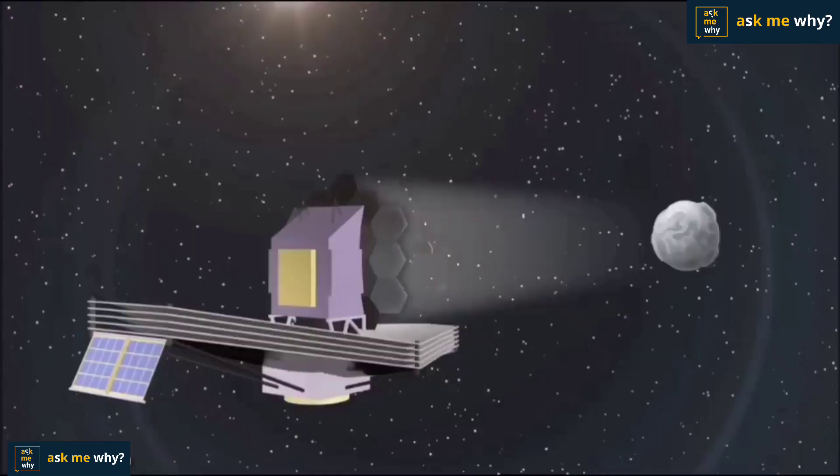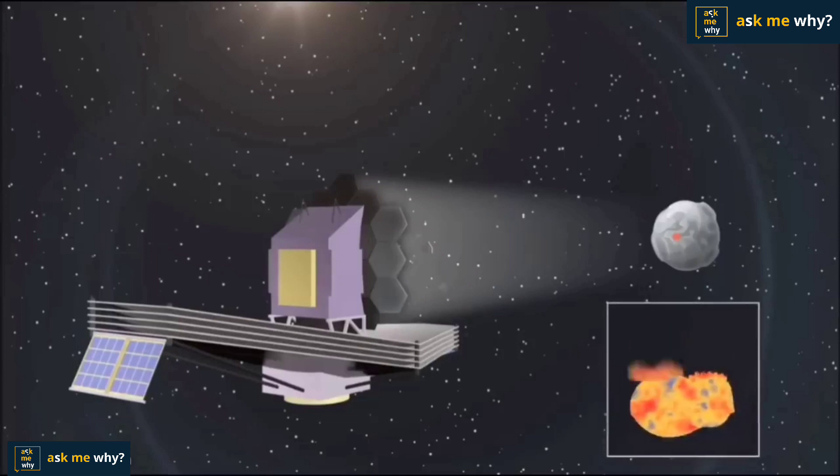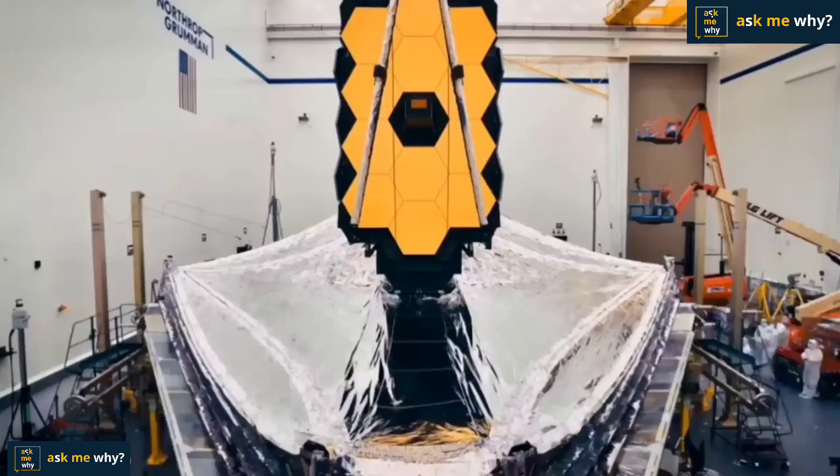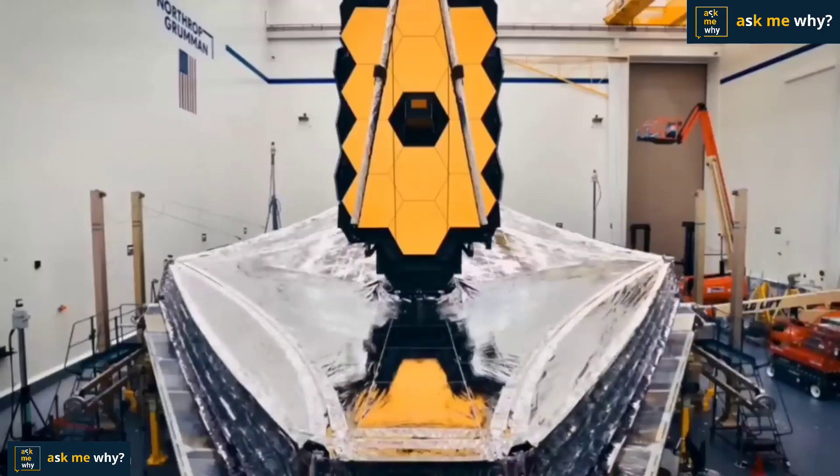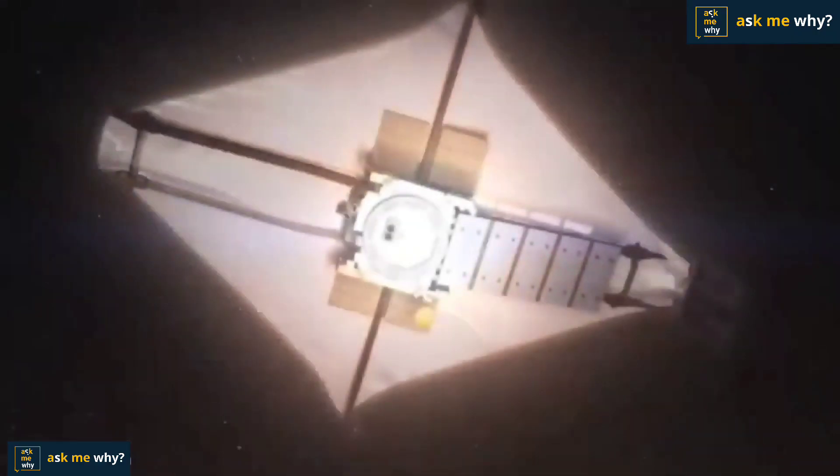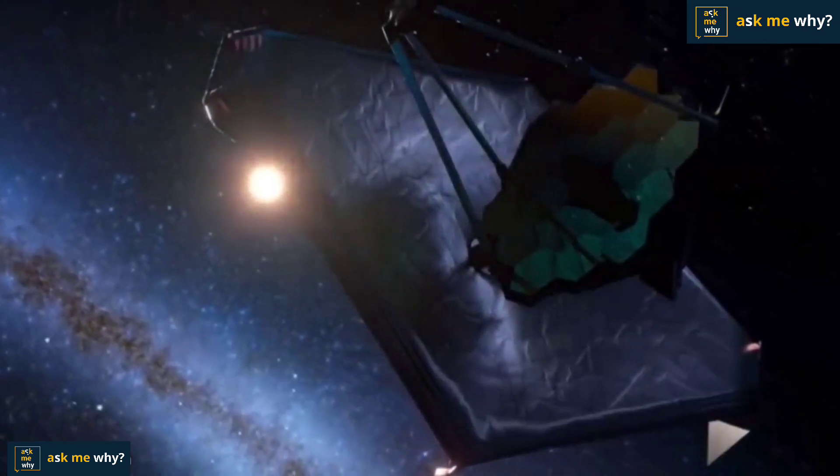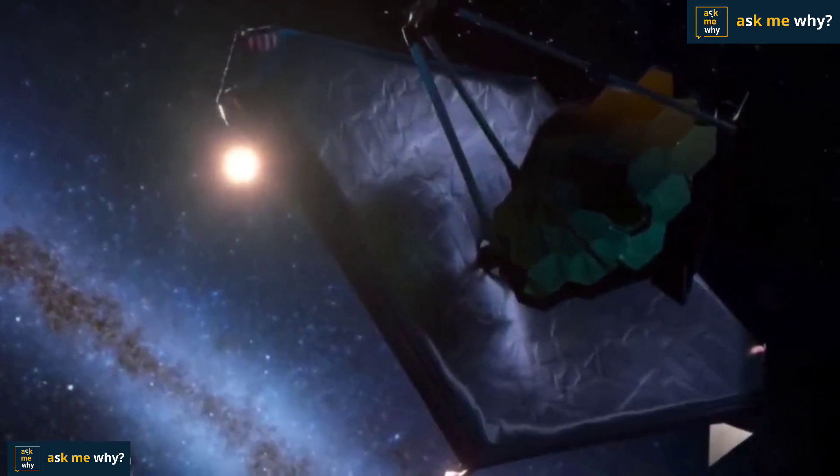It is 100 times more powerful than the Hubble telescope. For instance, if you assume there is a small fly on the surface of the moon, the optics of James Webb Telescope can sense the heat energy coming from the fly's body. The cost of making it is approximately 10 billion dollars. Why did it cost so much? What are special features of it? Will it solve the mysteries of the birth of the universe?